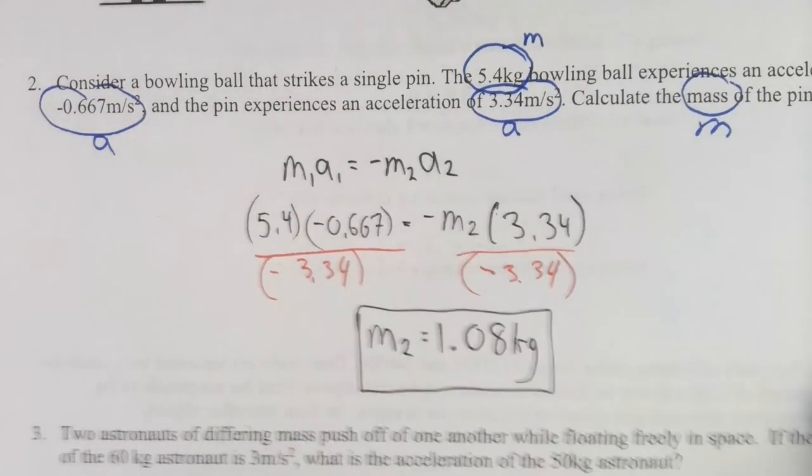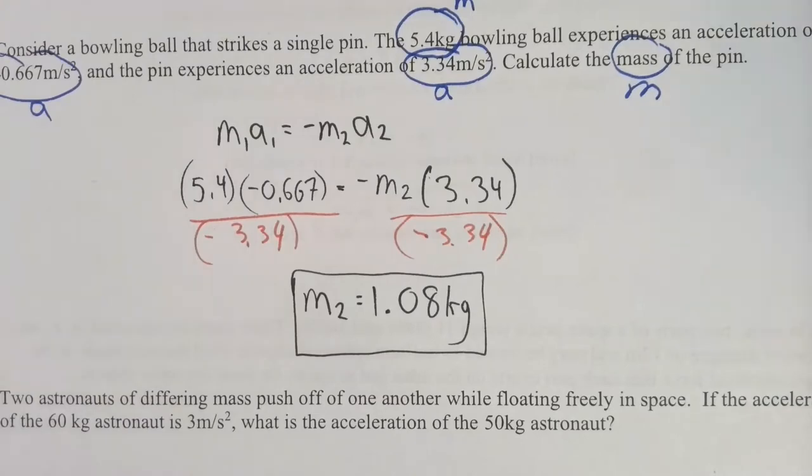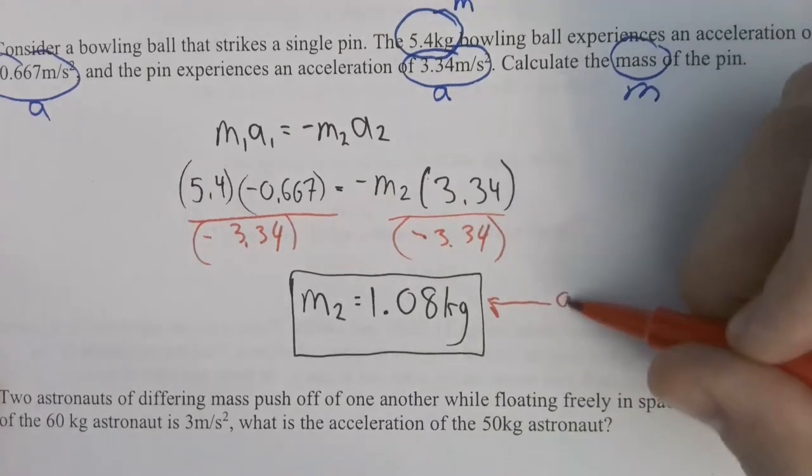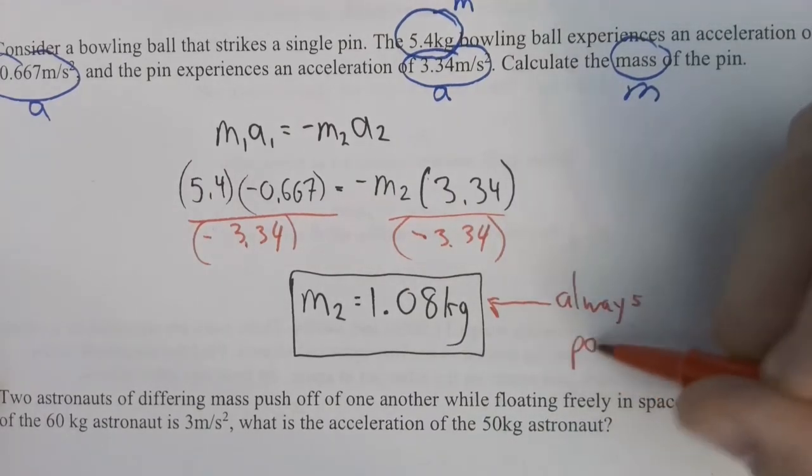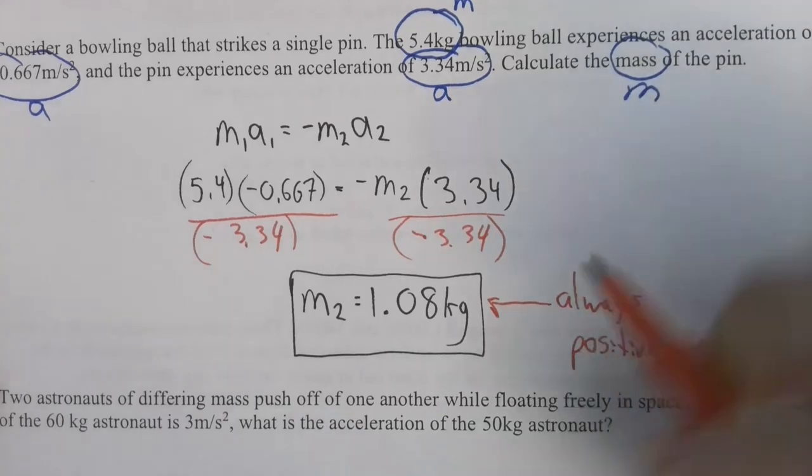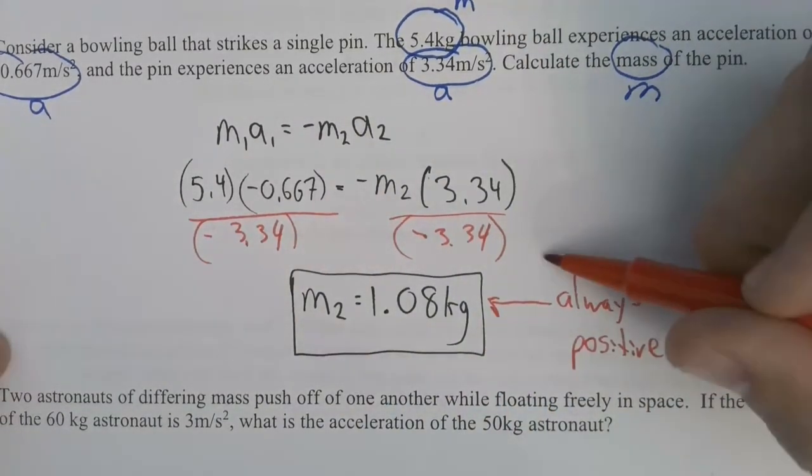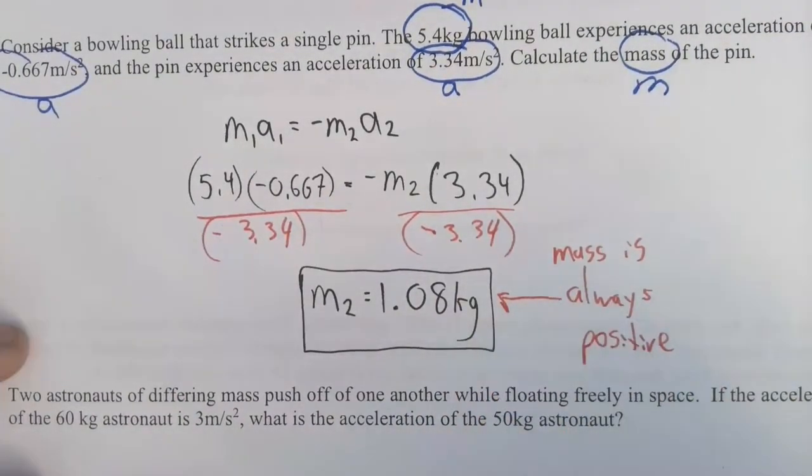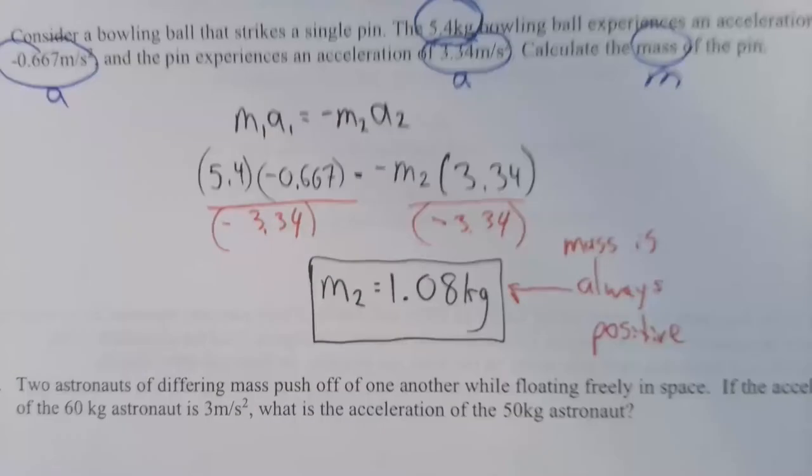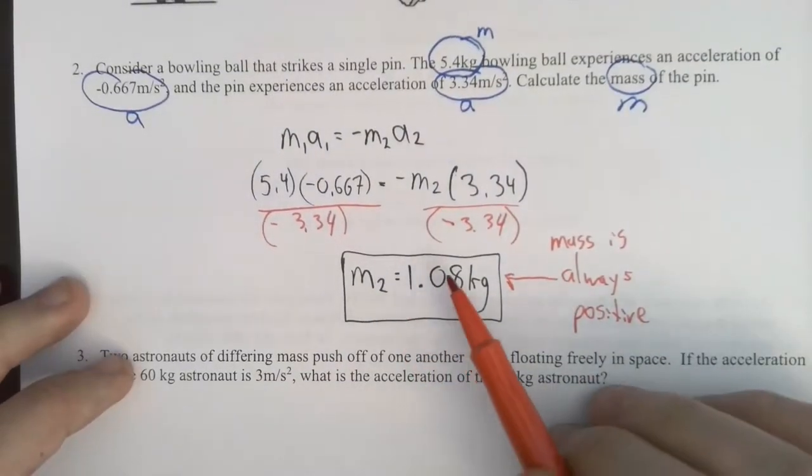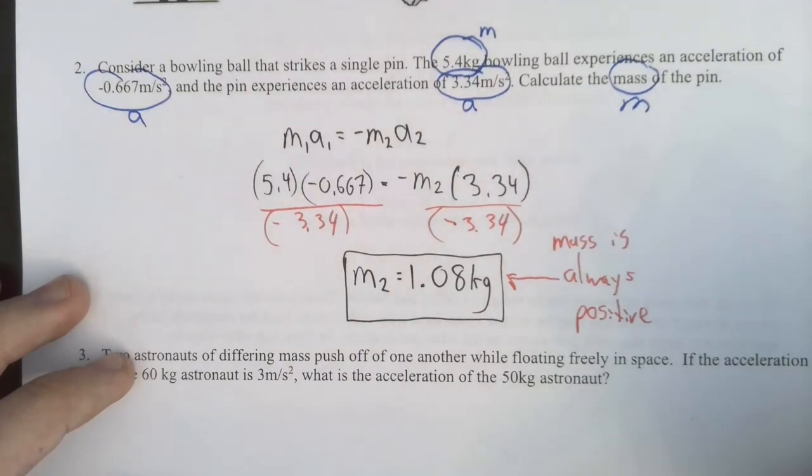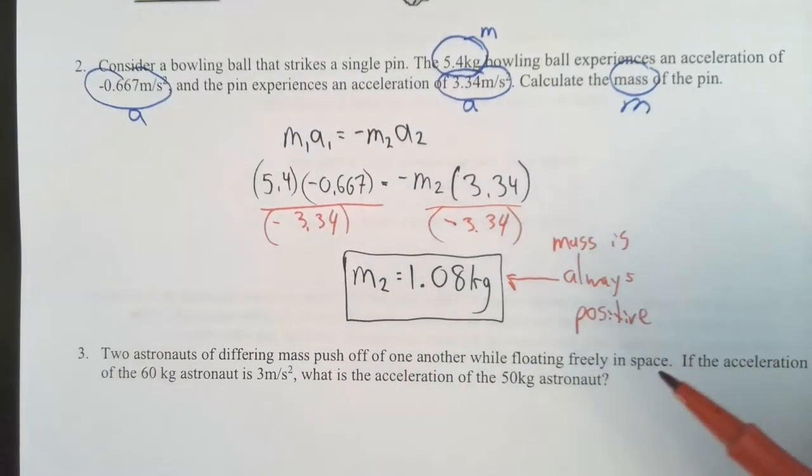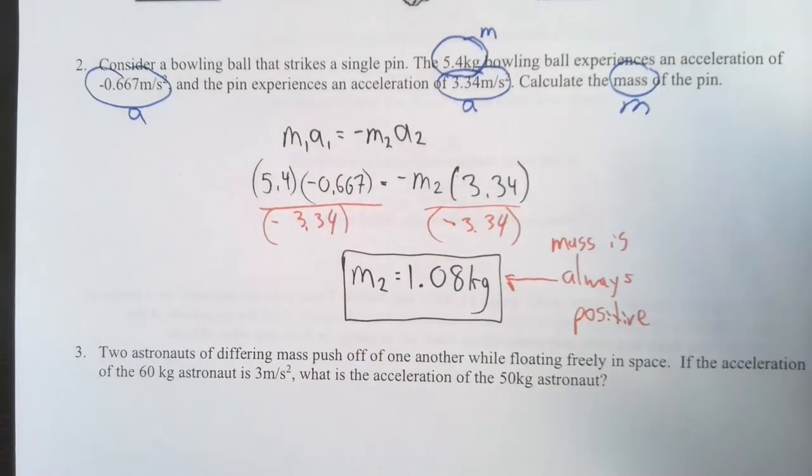Mass is always negative. So if you get a negative answer, that means you made a mistake. I think I misspoke. This is always positive. I'm not sure if I said that right before. Anyway, this is always positive. So mass is always positive. If you get a negative answer for mass, that means you did something wrong. And look at that. The pin experiences more acceleration because it's lighter weight, lighter mass. Onward.